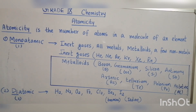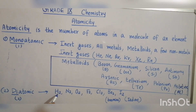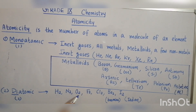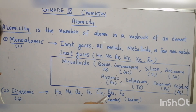Diatomic — di means two. There are two atoms present in this molecule. Examples: hydrogen, nitrogen, oxygen, fluorine, chlorine, bromine, and iodine.